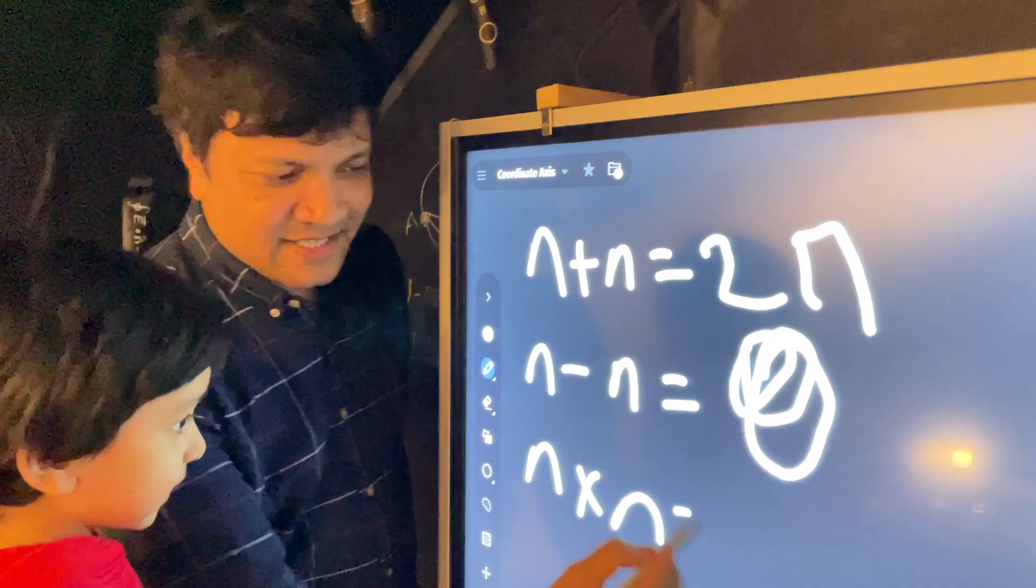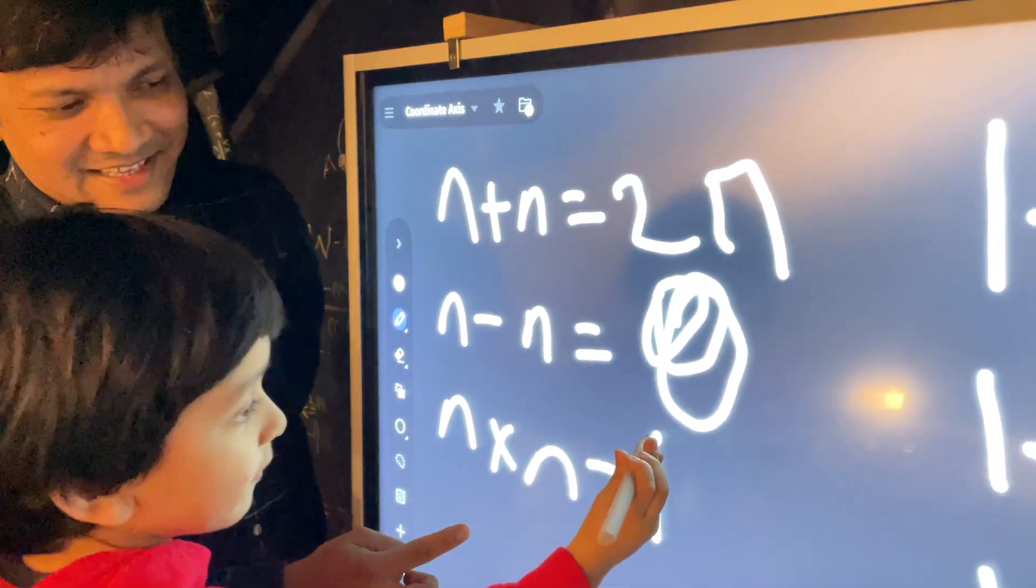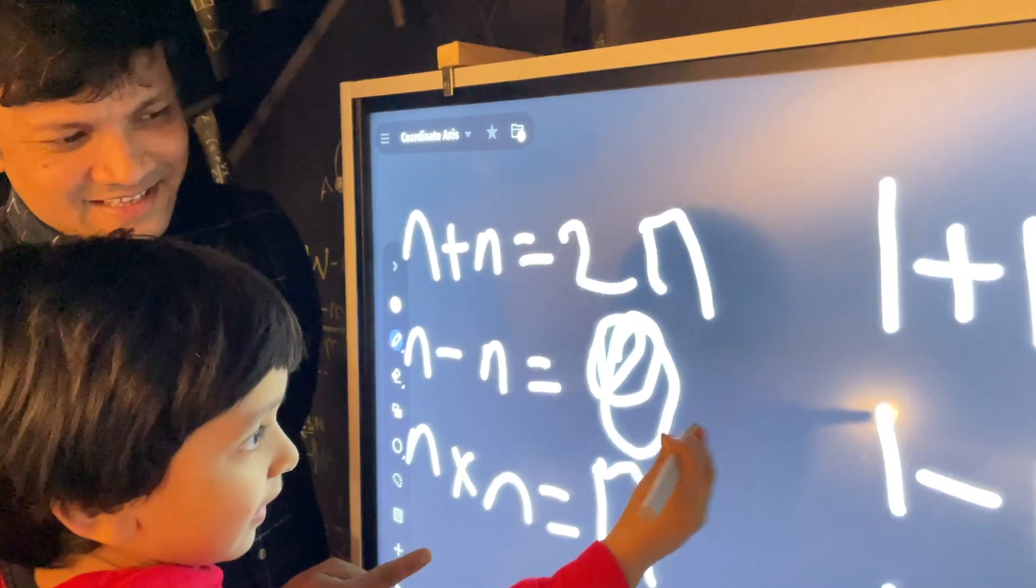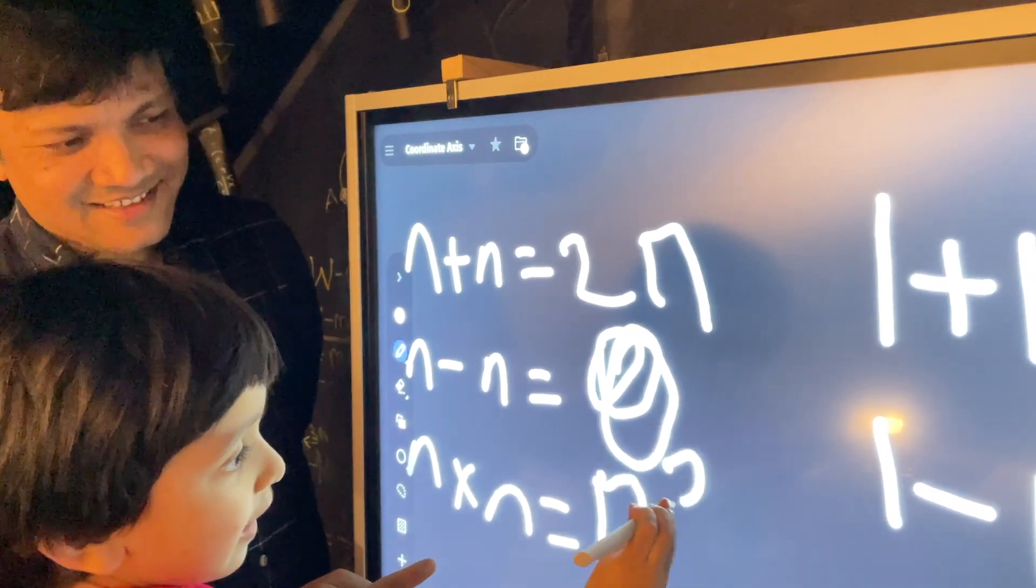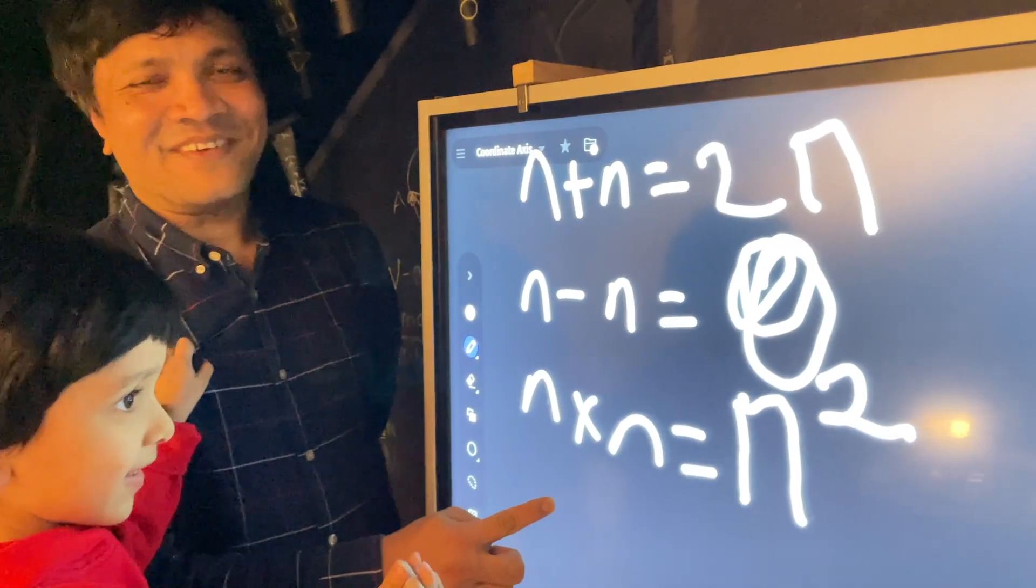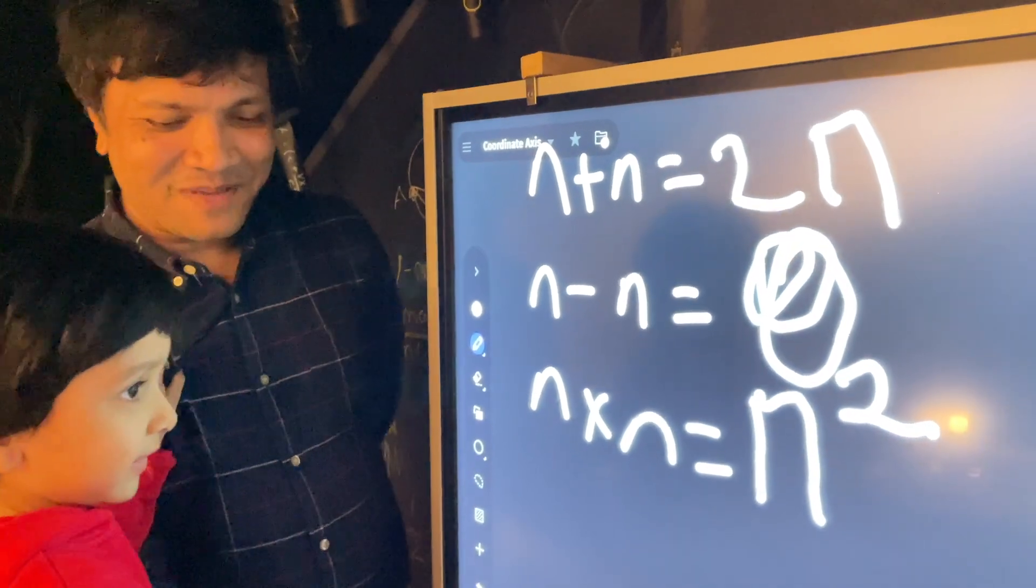All right. So, what is it? N times n is how much? N squared. Excellent. He even knows how to write n times n. Wow. That's fine. Give me the pen.